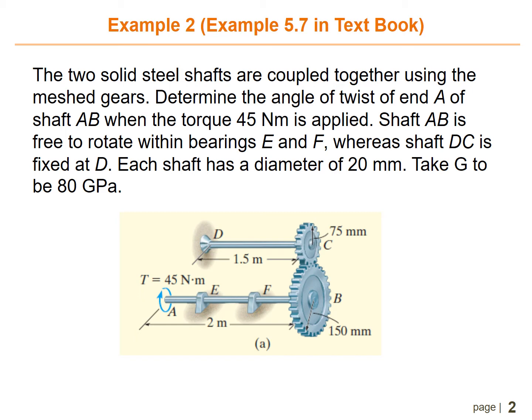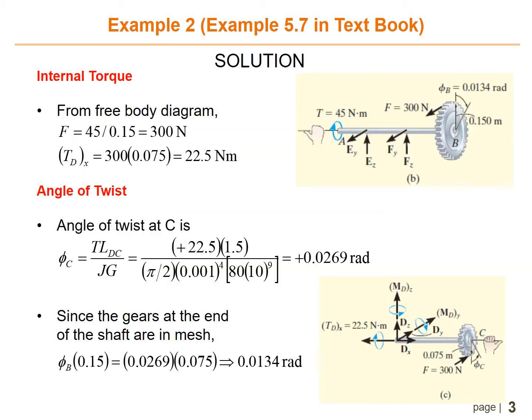For Example Number 2, you can refer to the textbook Mechanics of Materials Example 5.7. The question asks you to determine the angle of twist of end A of shaft AB when a torque of 45 Newton meter is applied. Shaft AB is free to rotate within bearings E and F, whereas shaft DC is fixed at D.